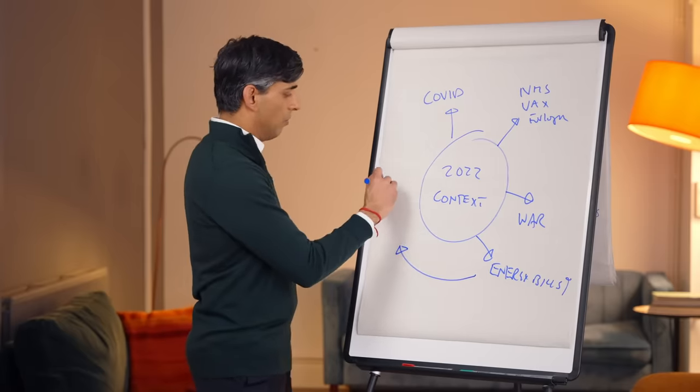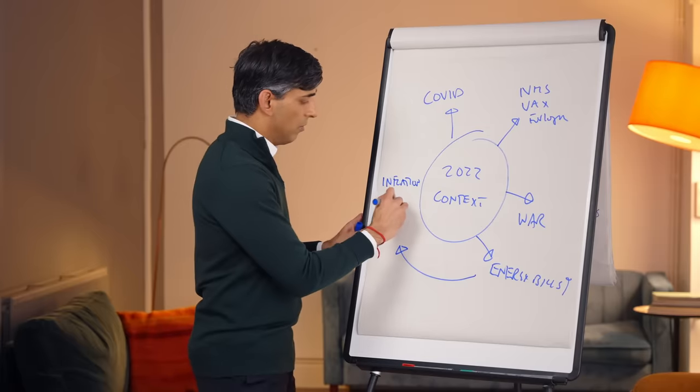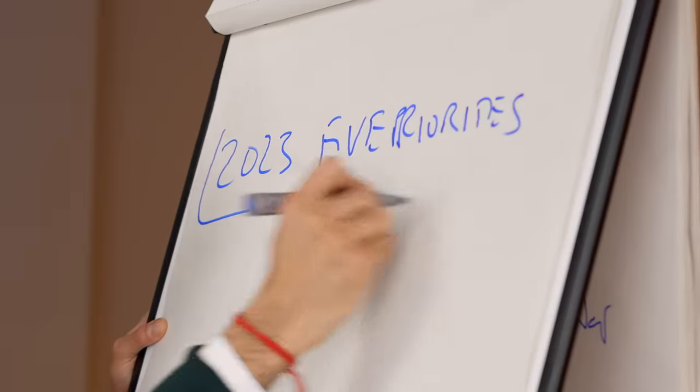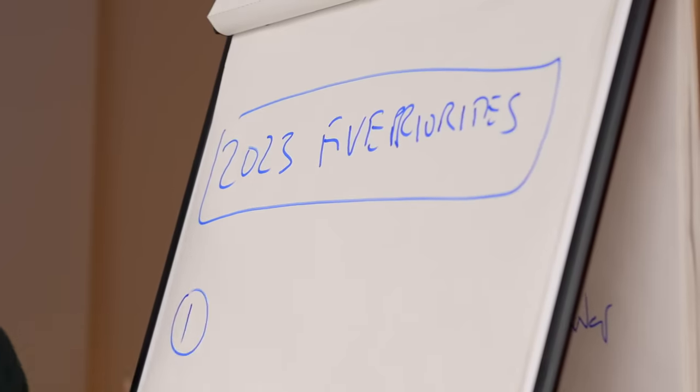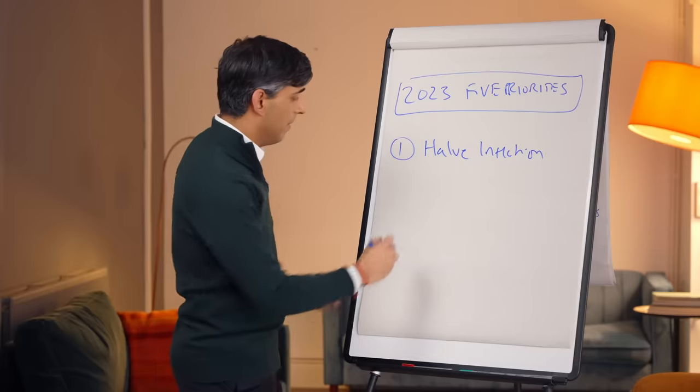But all of these things meant that we saw high inflation, that's what caused all the pressures with the cost of living. At the beginning of last year, I set out five priorities. First of those priorities was to halve inflation. What's happened to inflation over the past year?